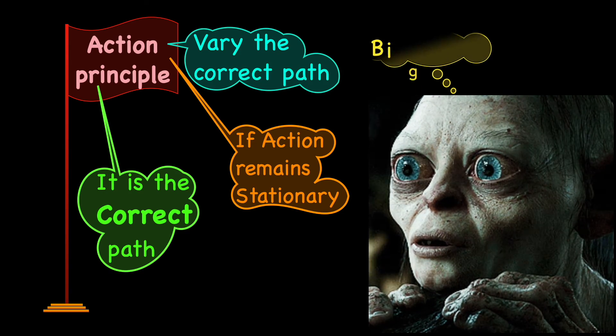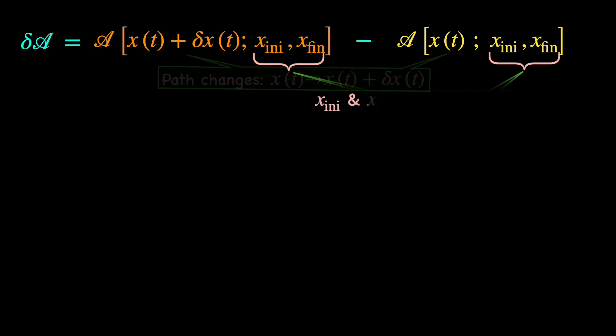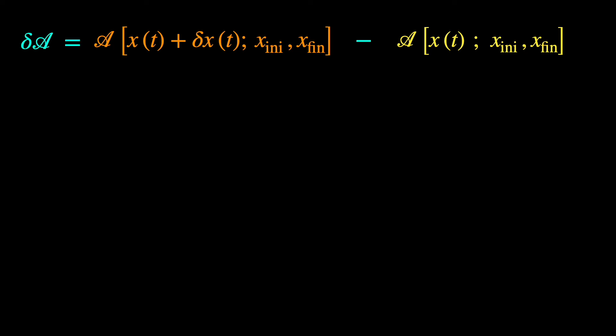The point of the action principle is we can turn this logic around and mathematically calculate the change in the action delta A for varying a generic or arbitrary trajectory x(t) infinitesimally to x(t) plus delta x(t) while keeping the terminal event points fixed as we have said. Some simple mathematical manipulations, for example Taylor expanding the action for the varied path to first order in delta x(t), allow us to express the change in the action delta A by factoring out the delta x(t).